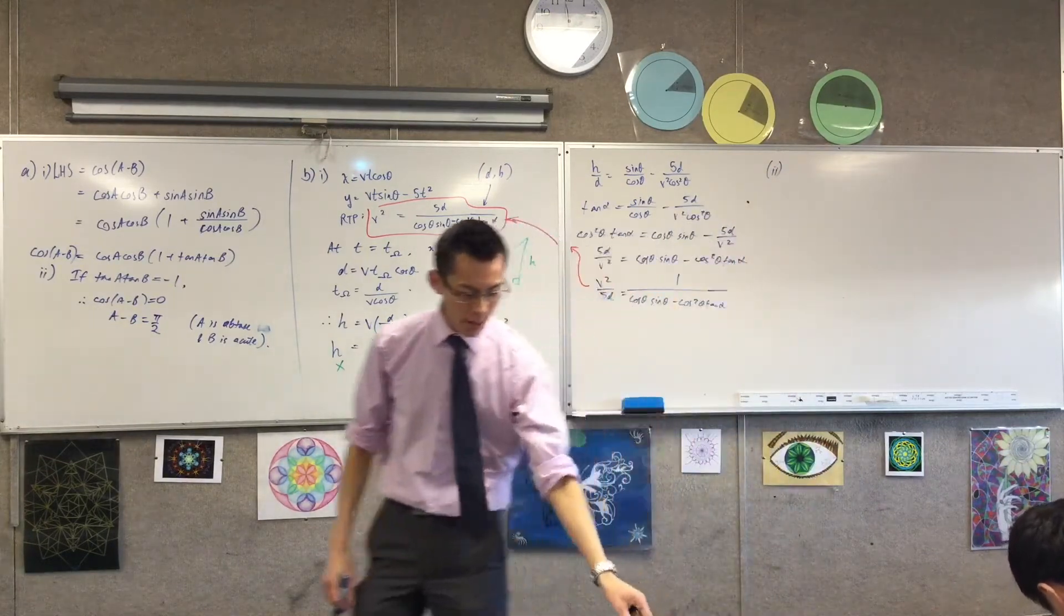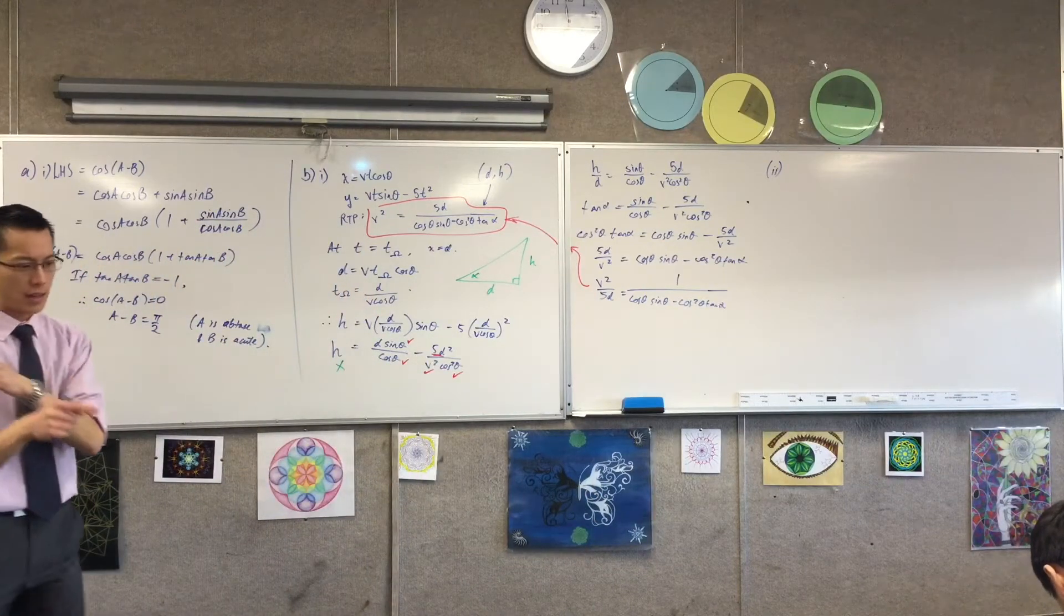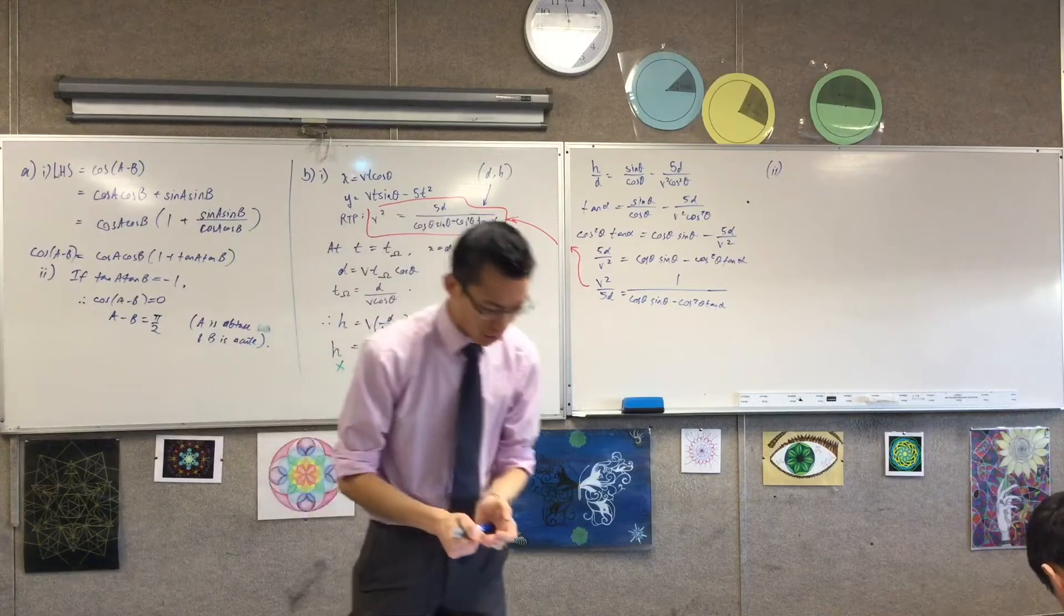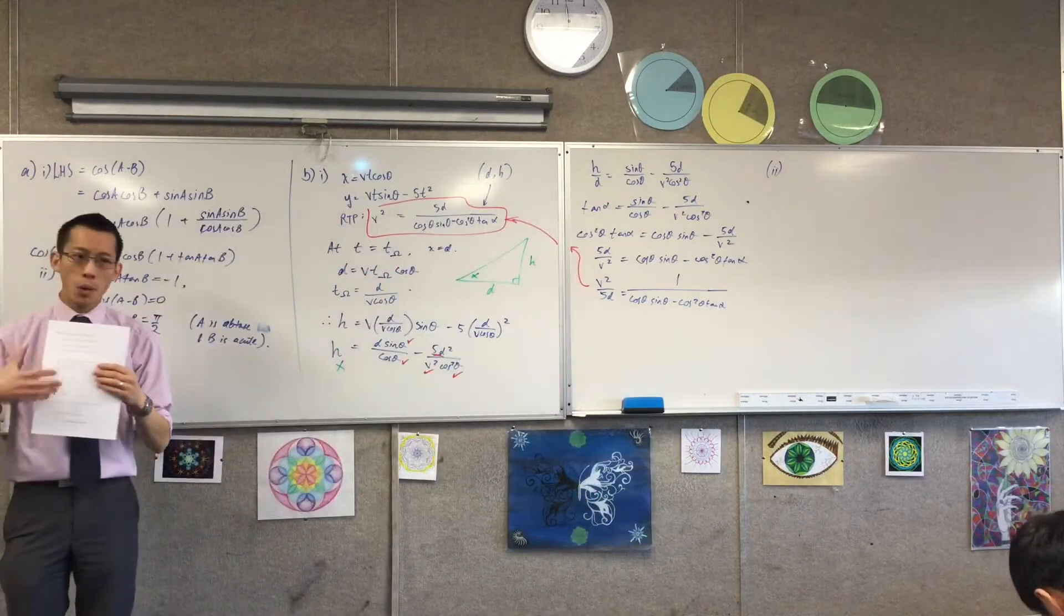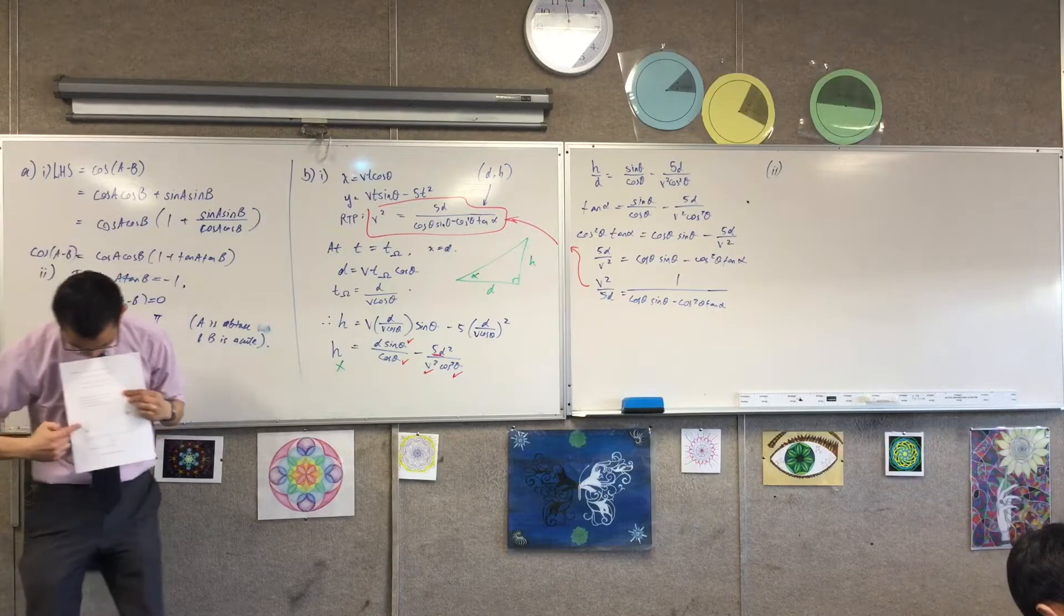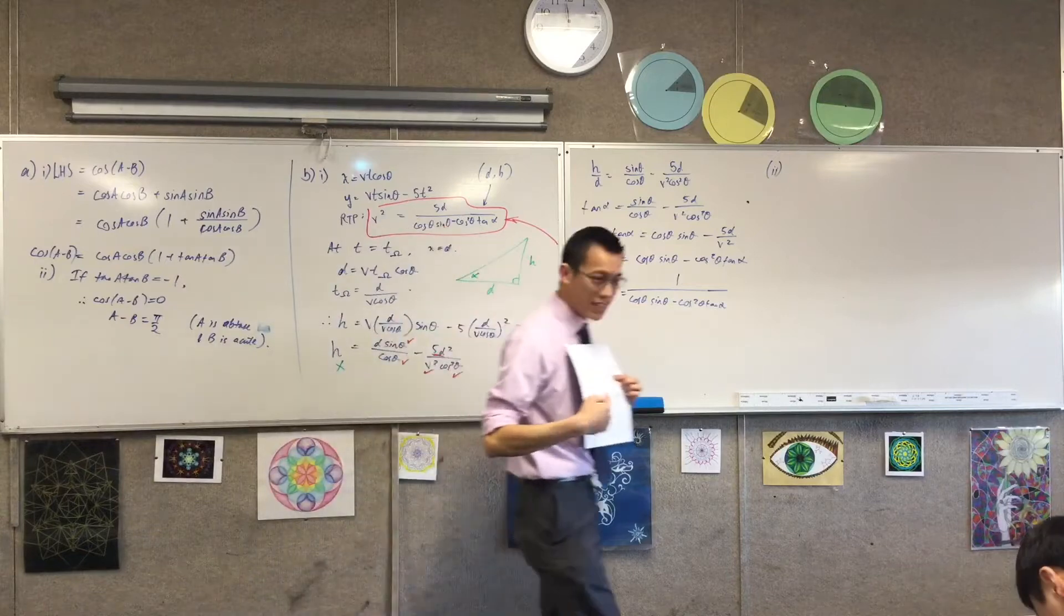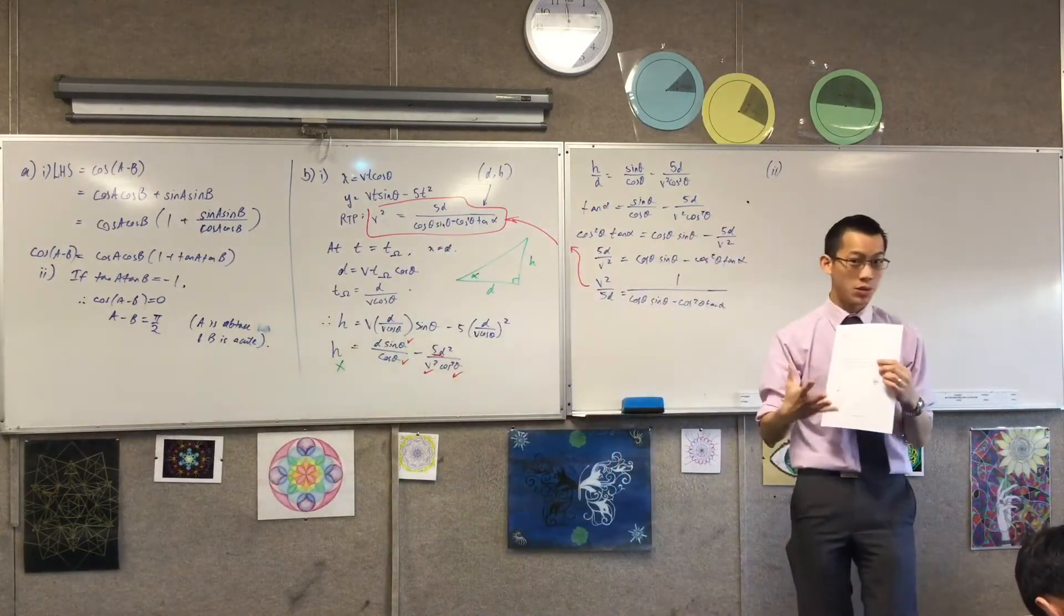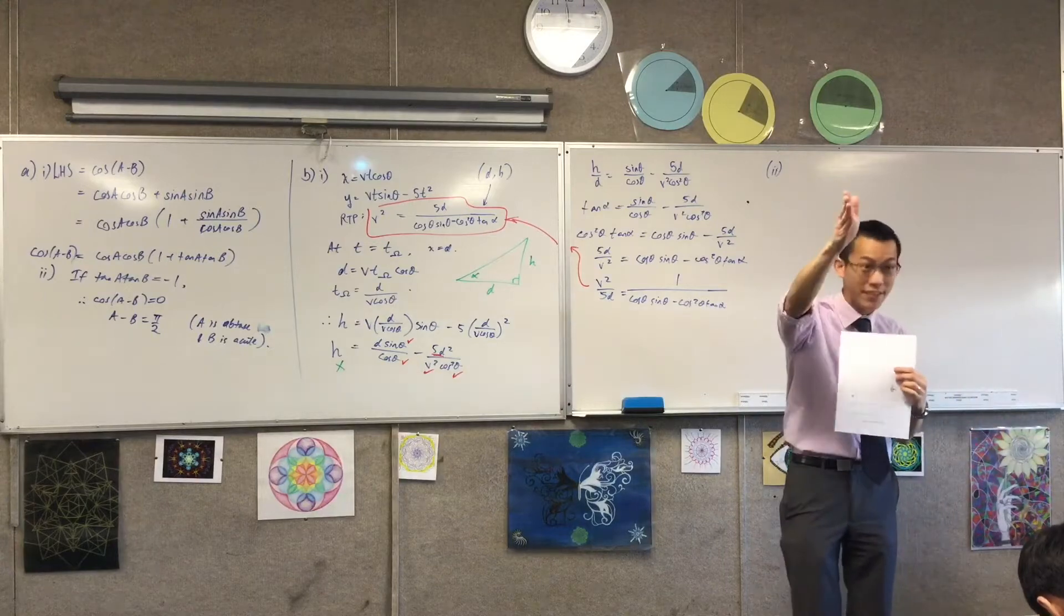They're interested in the limit of velocity as theta approaches alpha. Just think for a second, don't start doing algebra yet. Look at the diagram. What does this mean? As theta gets closer to alpha, what you're doing is trying to throw the ball as close as you can straight at the hoop. Does that make sense? Like directly at the hoop.